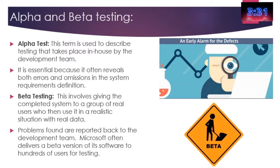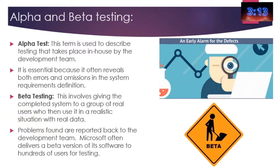You've also got alpha and beta testing. Alpha and beta testing are two early types of tests you can carry out as a program developer. Alpha testing is used to describe the test that takes place in-house — done by the programmers themselves, looking at test plans. Whereas beta testing involves giving the system out to a group of people who are, or potentially are, your customers, and letting them test it and get back to you about any problems.